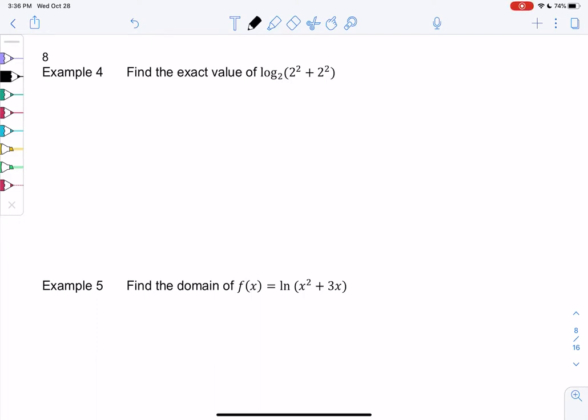Section 6-2, example 4. We're simplifying logs. Our calculator won't find this value for us, so we're going to use some of the properties we learned. We have log base 2, and then we have parentheses 2 squared plus 2 squared.